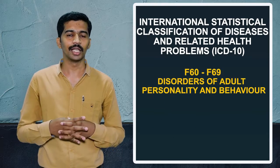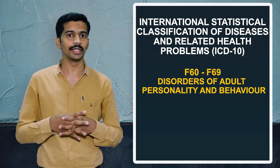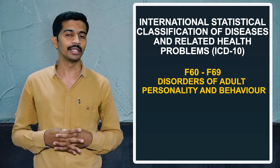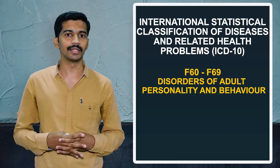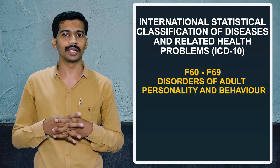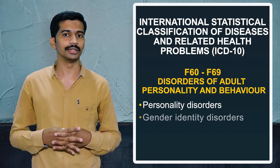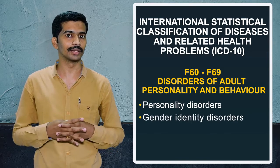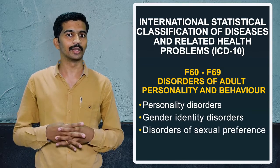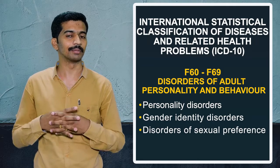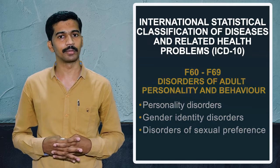The next chapter, F60 to F69, covers adult personality disorder, gender identity disorder, and sexual preference disorders.